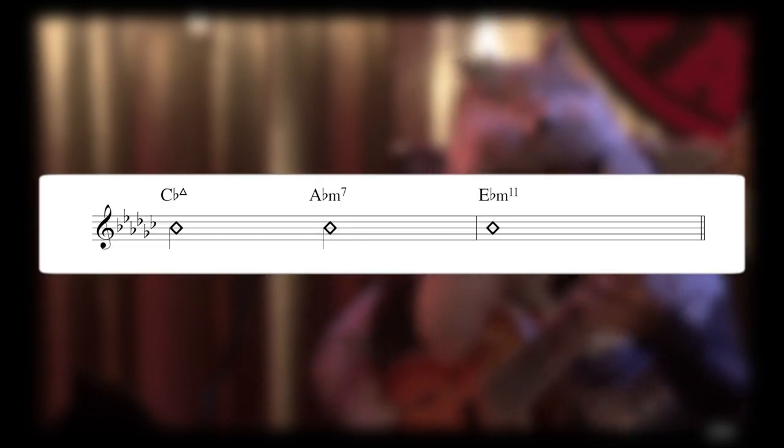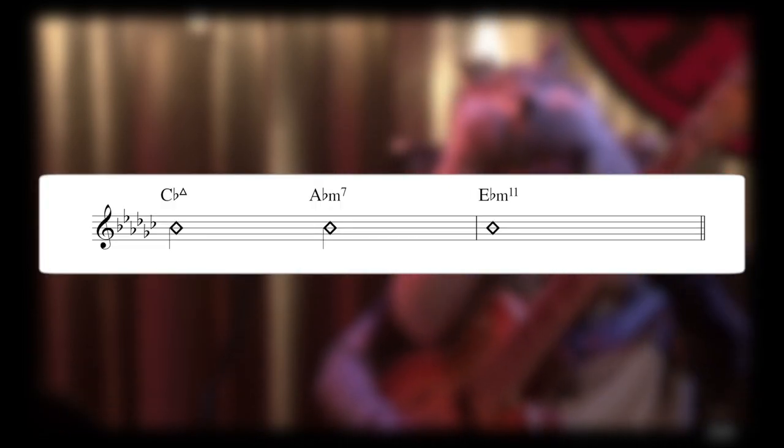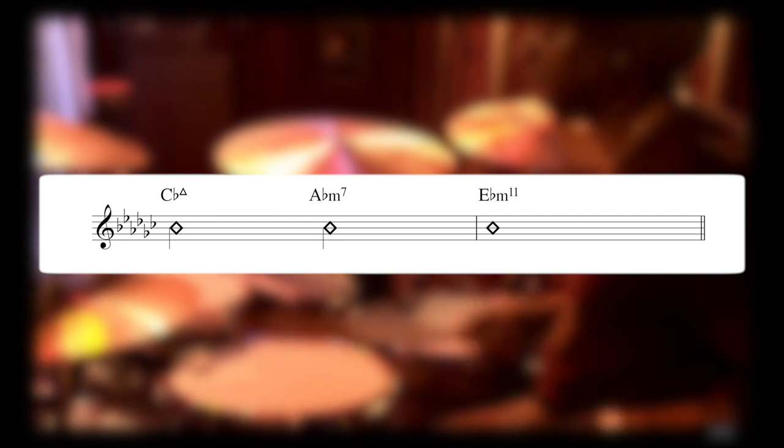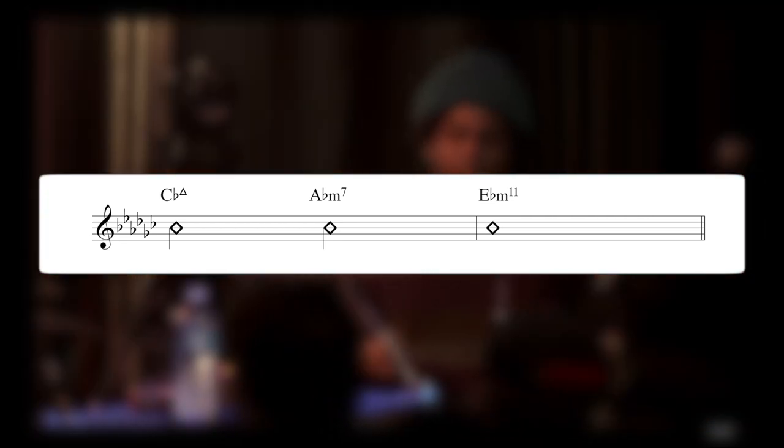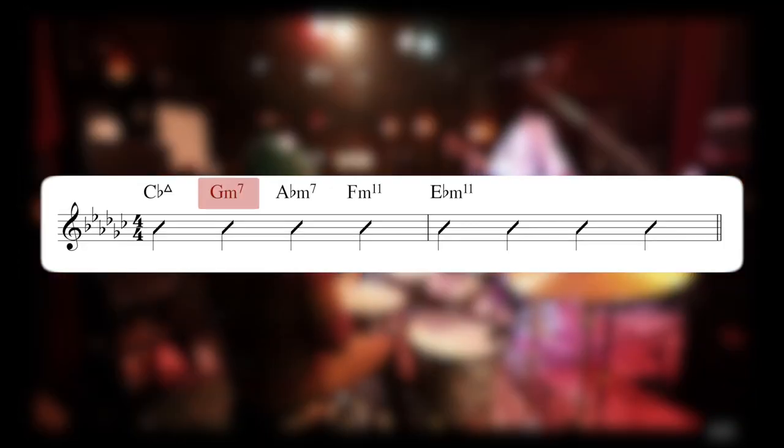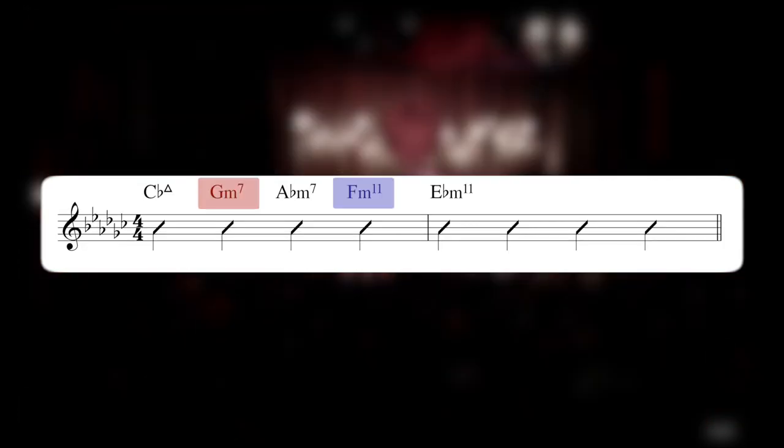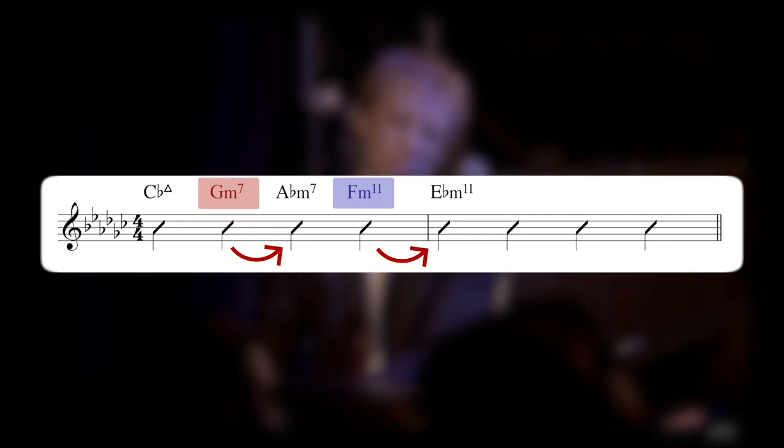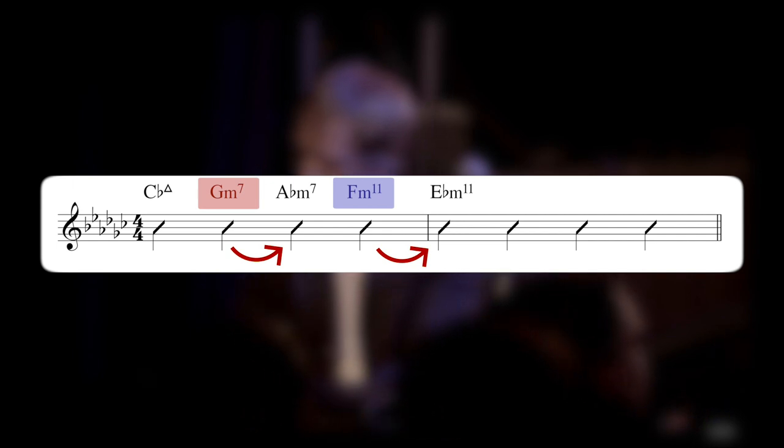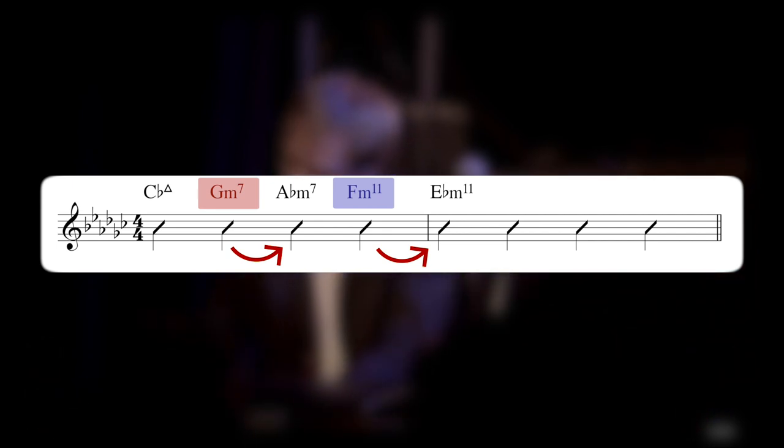Check it out. So these G minor 7 and F minor 11 are basically approach chords and they are announcing the chords that are coming after them. Because they come from different keys, they bring extra color and tension points to the progression.